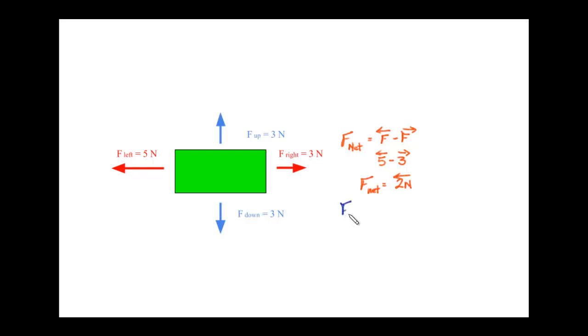In order to figure out the force net in this direction, I'm going to take all the forces in this direction and subtract all the forces in that direction, because the arrows are going in opposite directions.